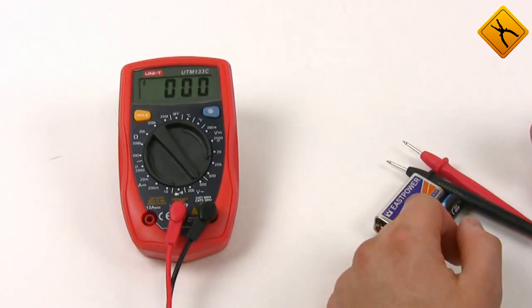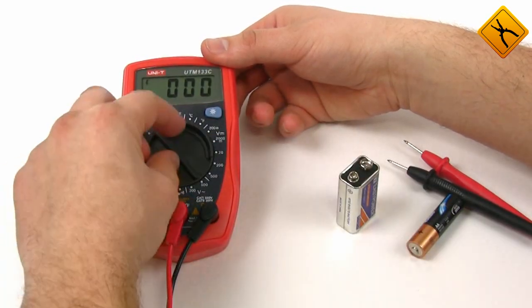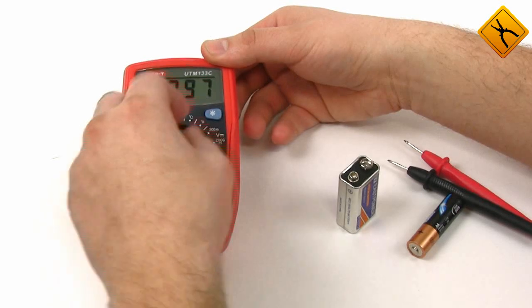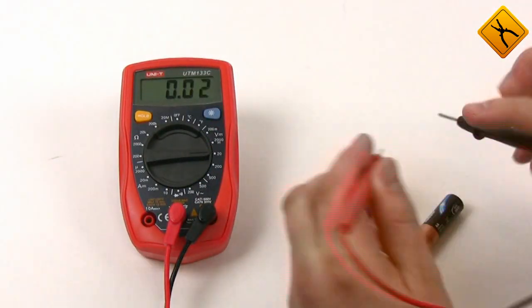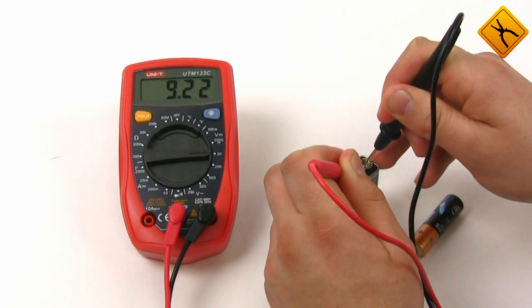Now we measure the battery voltage, starting with 9 volt brick battery. Turn the rotor switch to 20 volt DC. The voltage is 9.2 volt.